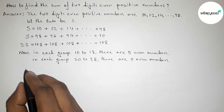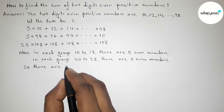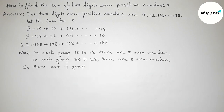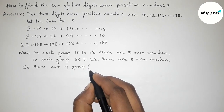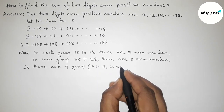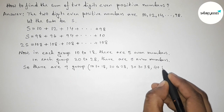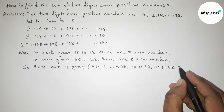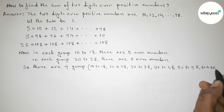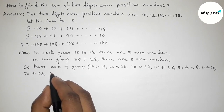The nine groups are: 10 to 18, 20 to 28, 30 to 38, 40 to 48, 50 to 58, 60 to 68, 70 to 78, 80 to 88, and 90 to 98. There are a total of nine groups, and each group contains five even positive numbers.